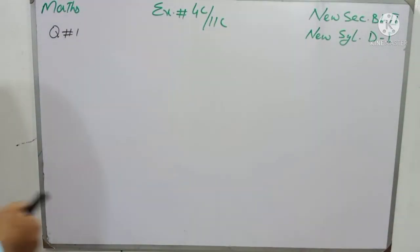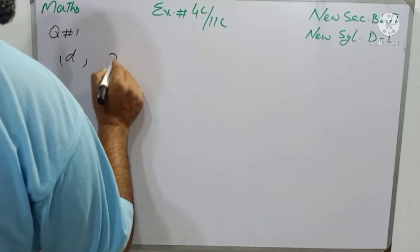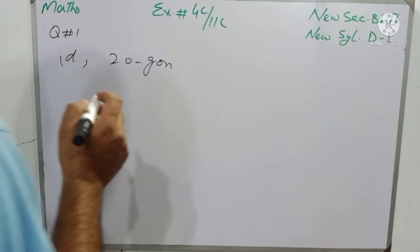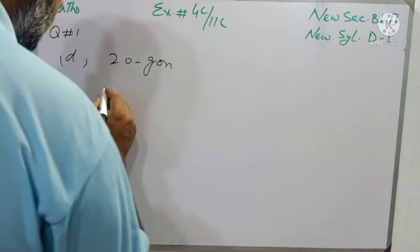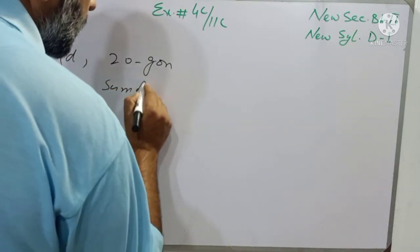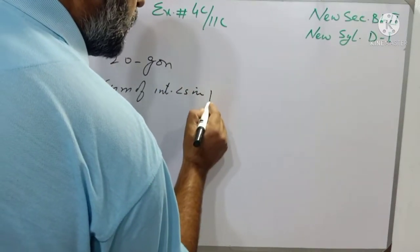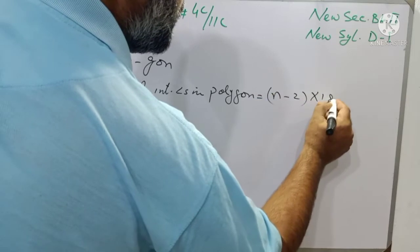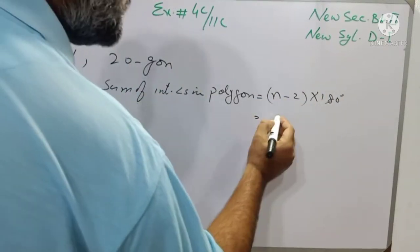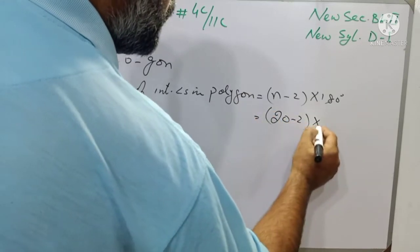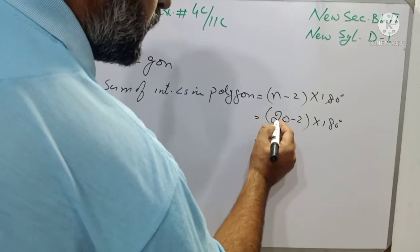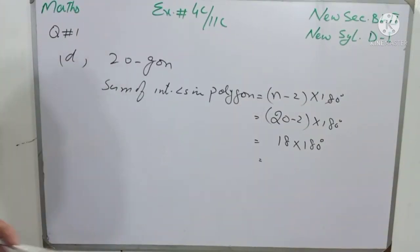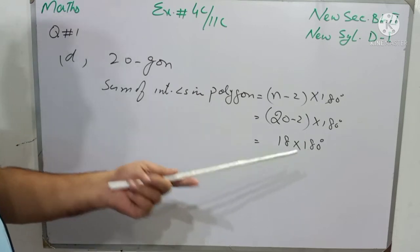The last part of Question 1 is Part D — a 20-gon, meaning a 20-sided polygon. We have to find the sum of interior angles. Using the formula: sum of interior angles equals (n minus 2) into 180 degrees. We write 20 minus 2 into 180 degrees. When 2 is subtracted from 20 we have 18, multiplied by 180 degrees. If you have a calculator, you can multiply 180 by 18 directly.